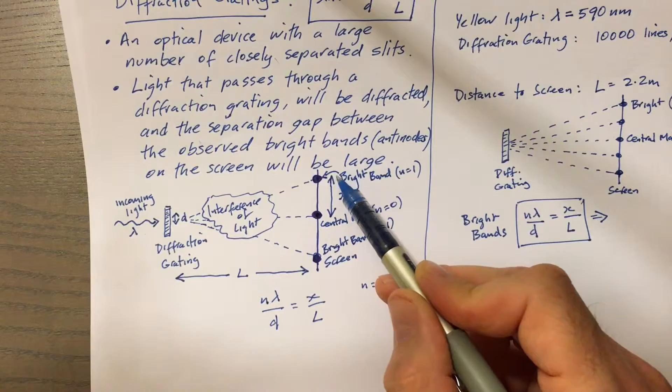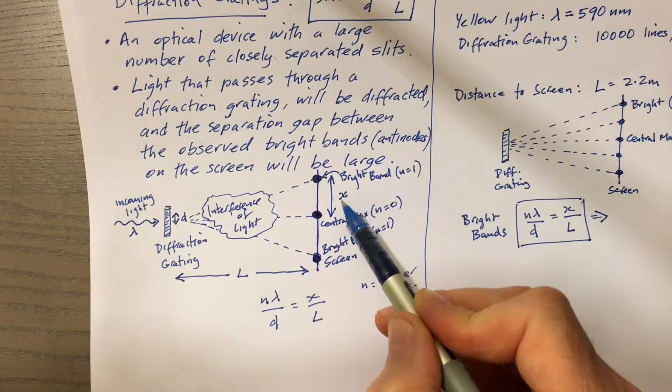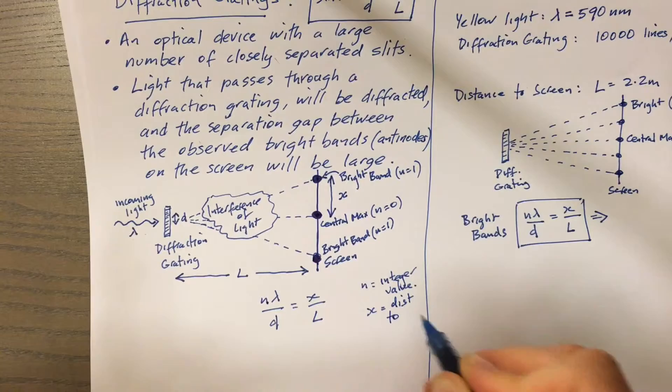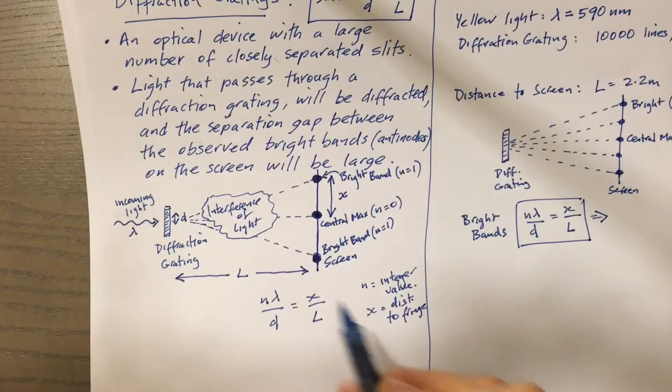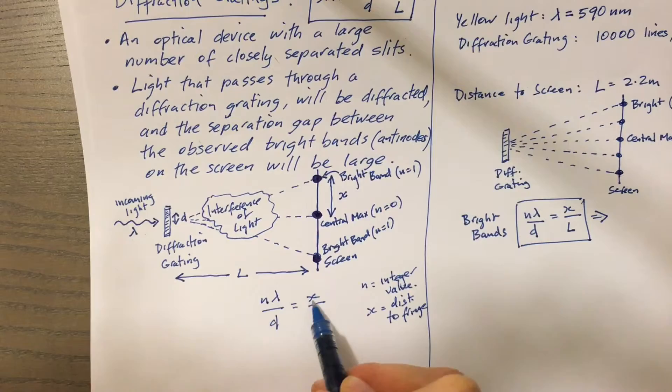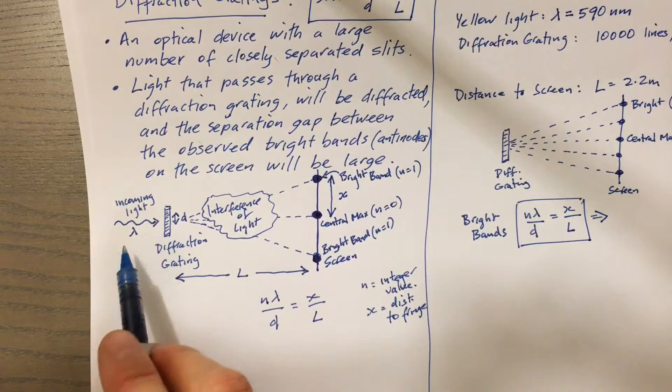When we measure to the next bright band, which we could say is n equal to one, that distance is x. So x is essentially the distance to the fringe or to the bright band wherever we're trying to go. n and x sort of correspond to each other. As n increases, x increases.